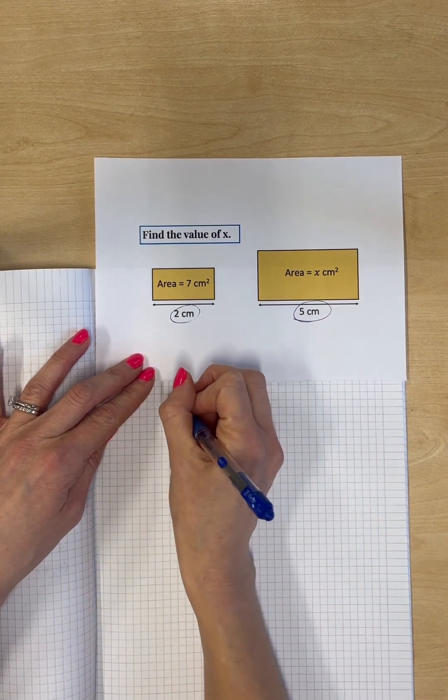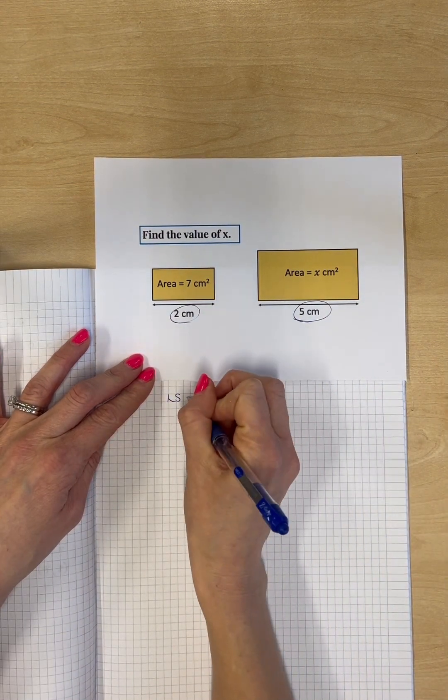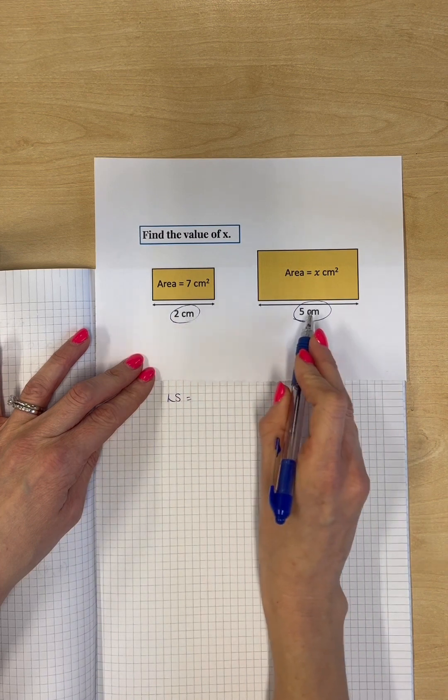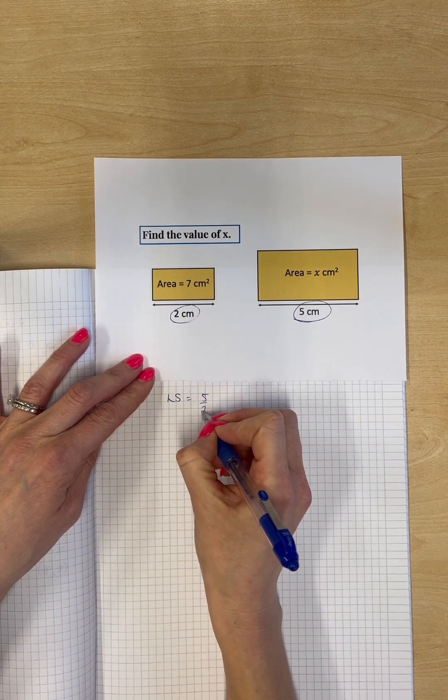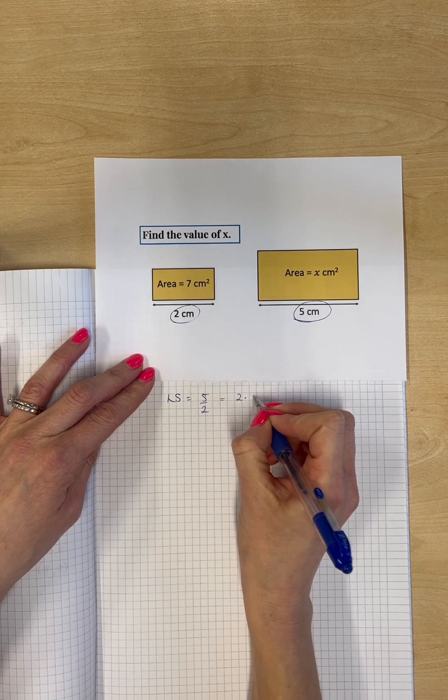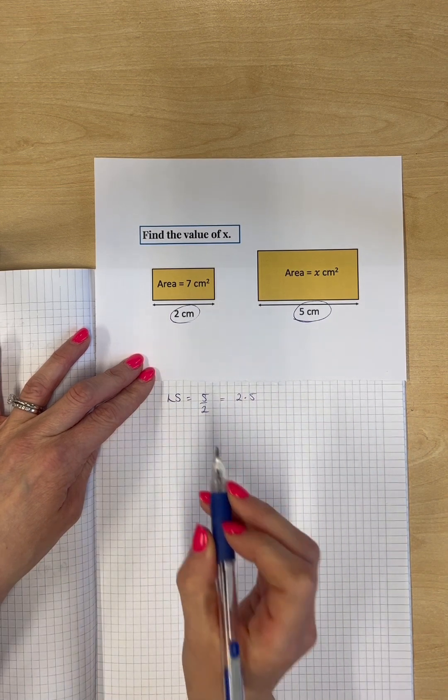So remember, the length scale we get from dividing two lengths together. So we're going to do 5 divided by 2, which gives us 2.5. That is our length scale.